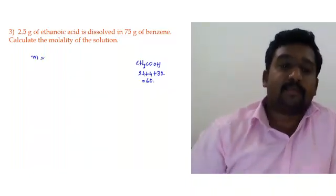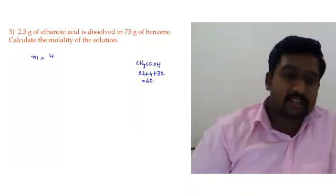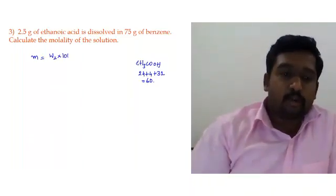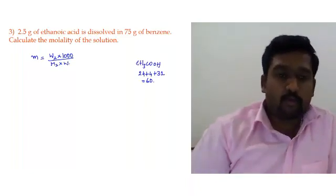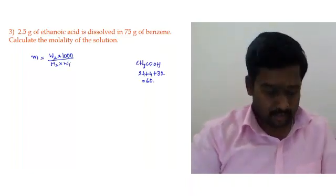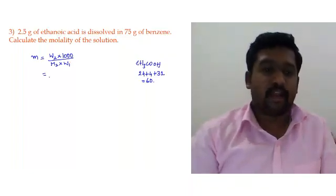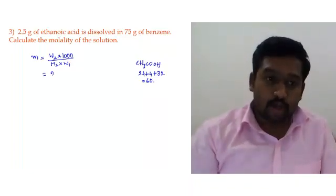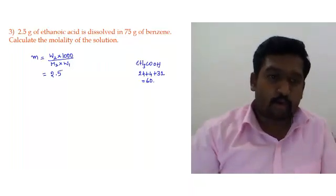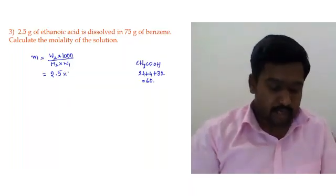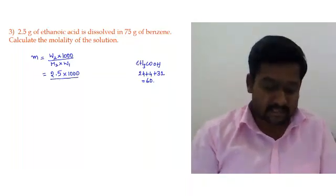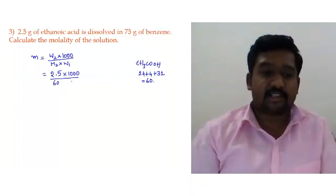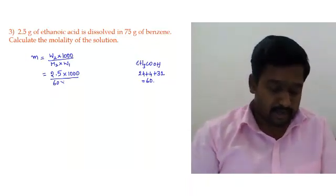Molality is given by the formula: m = w₂ × 1000 / (M₂ × w₁). Substituting all values: w₂ is the mass of solute (ethanoic acid) = 2.5 grams, multiplied by 1000, divided by the molecular mass of acetic acid = 60, multiplied by w₁ = 75 grams.